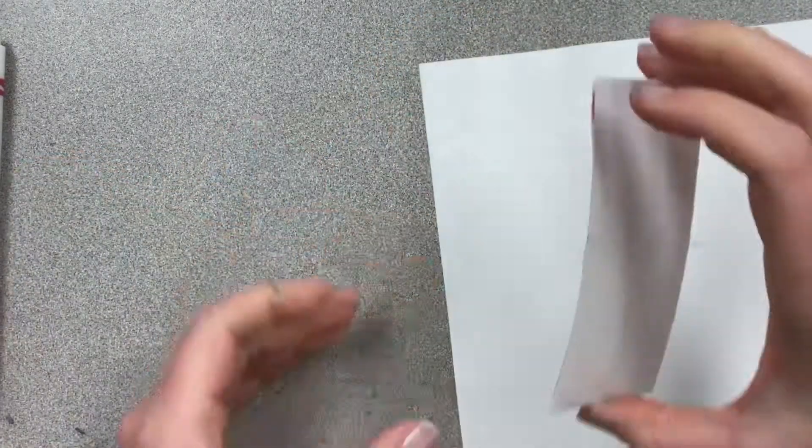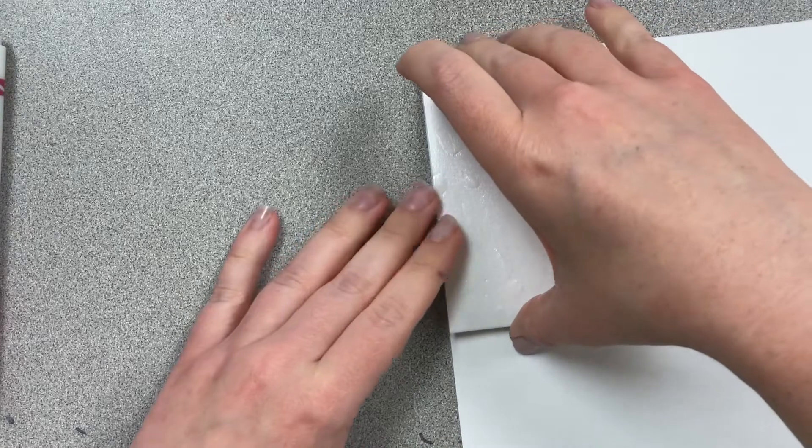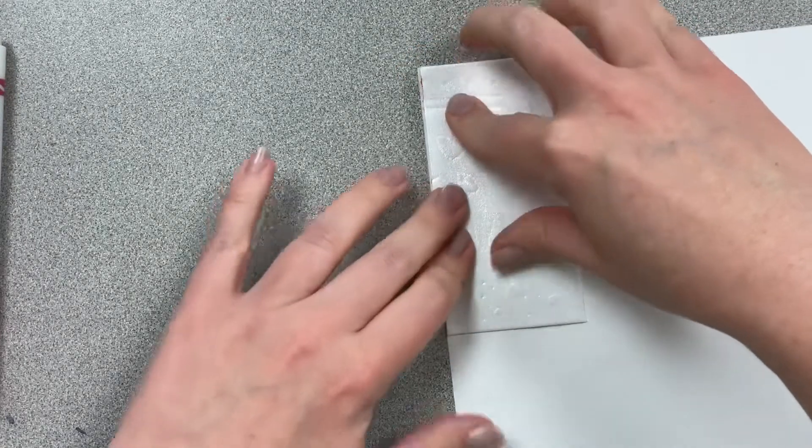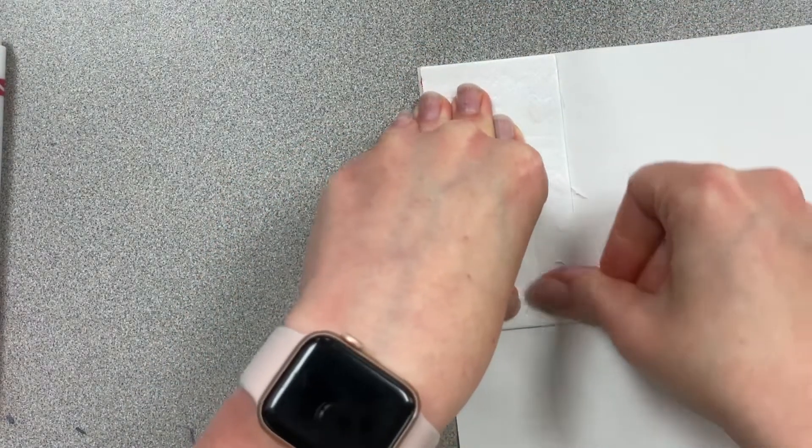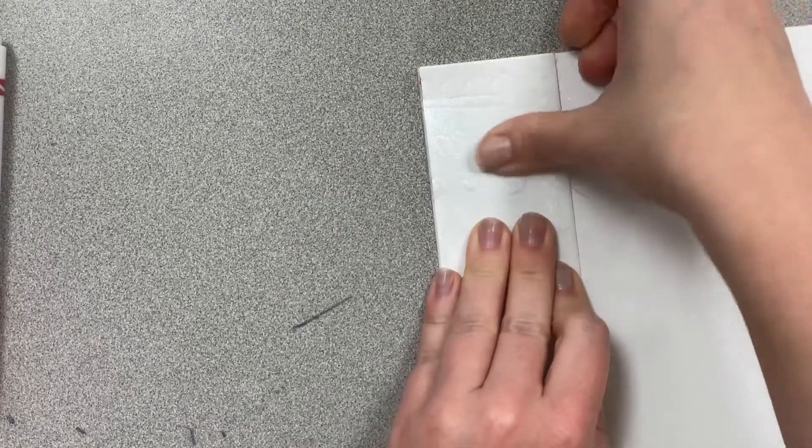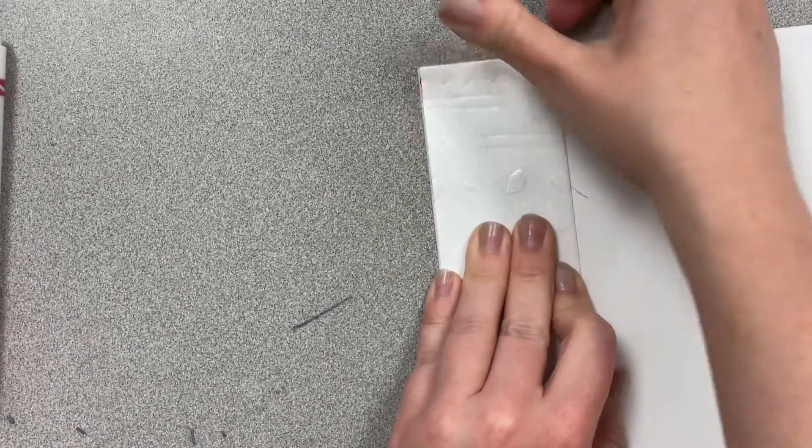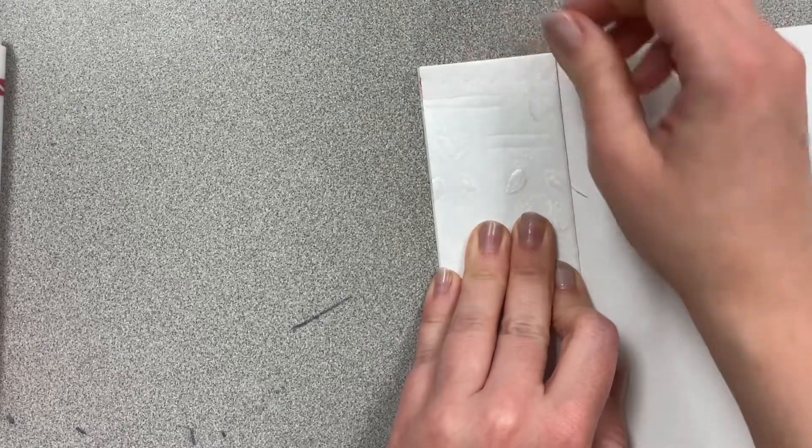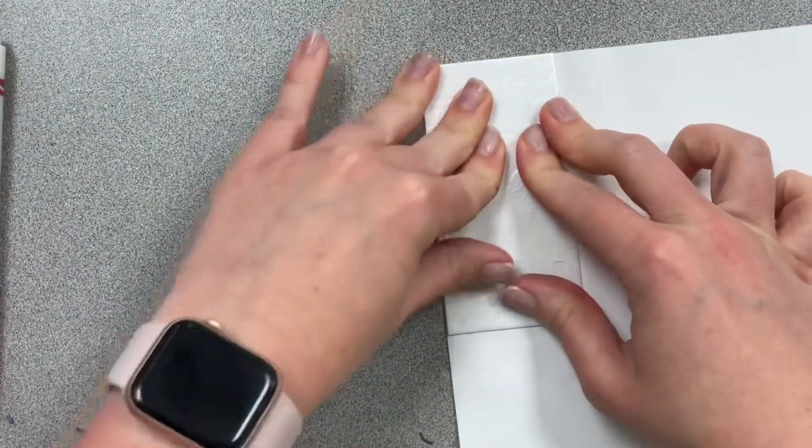Then I will take my stamp that I've colored. I'm going to flip it over so that the color is going to press into the paper. And then I'm going to use my arm muscles and rub the back of this stamp because what I'm trying to do is get the color to transfer from my stamp onto my paper.